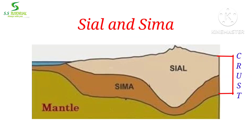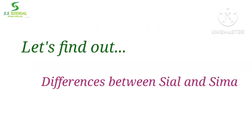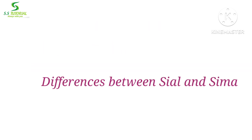The topmost layer of the earth crust, which is composed of silica and aluminium, is known as Sial. The layer lying below Sial, which is composed of silica and magnesium, is known as Sima. Sima is the second layer of the earth crust. Though Sial and Sima are parts of the earth crust, they have some differences. Let's find out those differences.